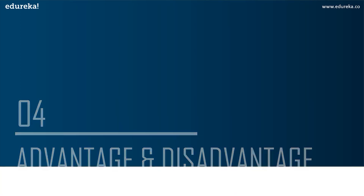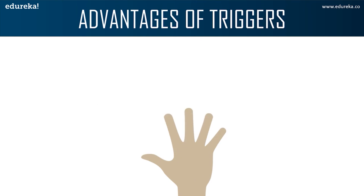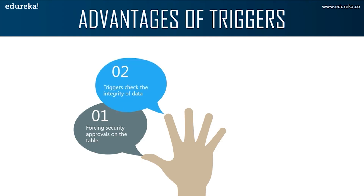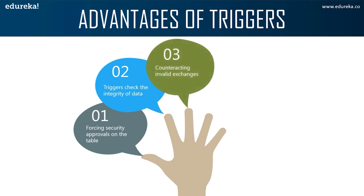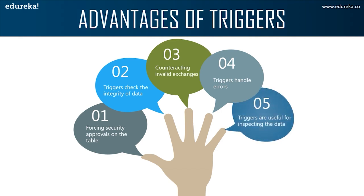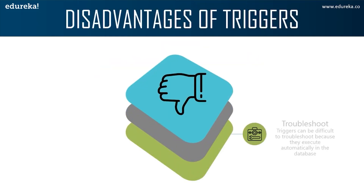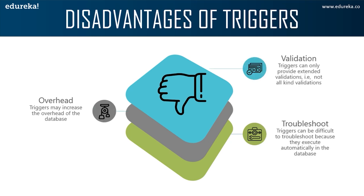Let's look at the advantages of triggers: they enforce security approvals on database tables, provide an additional way to check data integrity, counteract invalid transactions, handle errors from the database layer, and are useful for inspecting data changes in a table. Disadvantages include: triggers only provide extended validation — not all kinds of validations, and you cannot use NOT NULL, UNIQUE, CHECK, or FOREIGN KEY constraints within a trigger. Triggers may also increase database overhead, and they can be difficult to troubleshoot because they execute automatically and may not be visible to client applications.